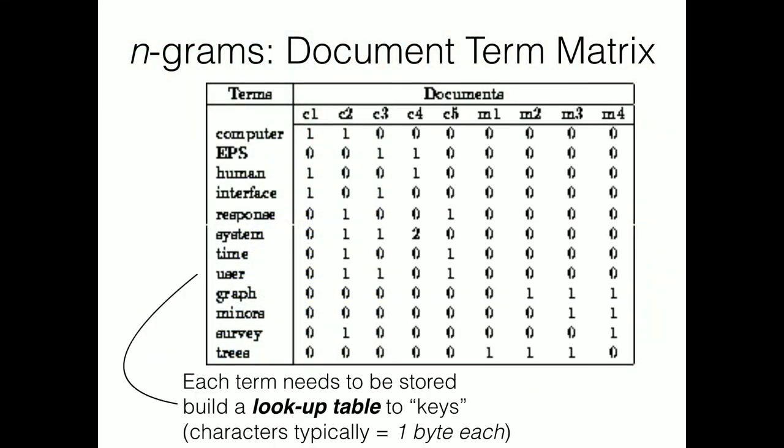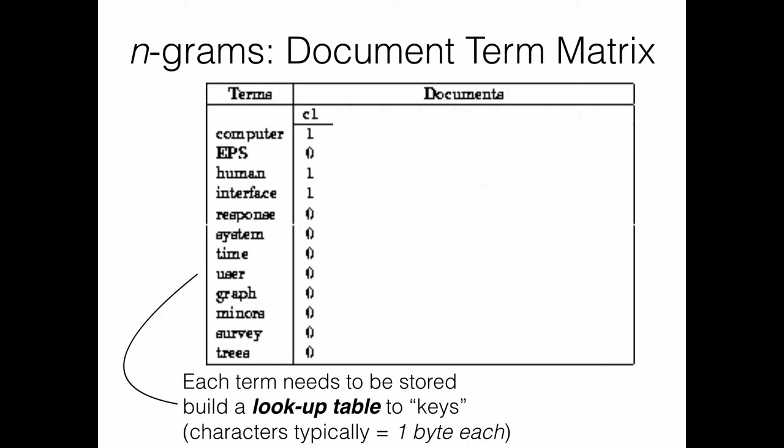What we're looking at is building out a document term matrix — essentially computing each term, storing it in a lookup table as keys, and seeing how many times terms occur across documents. This is a frequency-based document term matrix. What I'm really interested in is modeling one giant frequency dictionary across a corpus. You can take all the documents in a dataset — let's say a Yelp dataset, which is the one we'll look at today — and run a model to create a frequency dictionary.